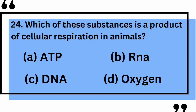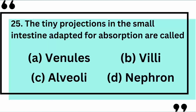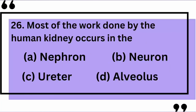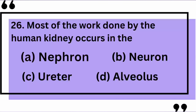Which of these substances is a product of cellular respiration in animals? The correct answer is A: ATP. The tiny projections in the small intestine adapted for absorption are called — the correct answer is B: villi. Most of the work done by the human kidney occurs in the — yes, the correct answer is A: nephron.